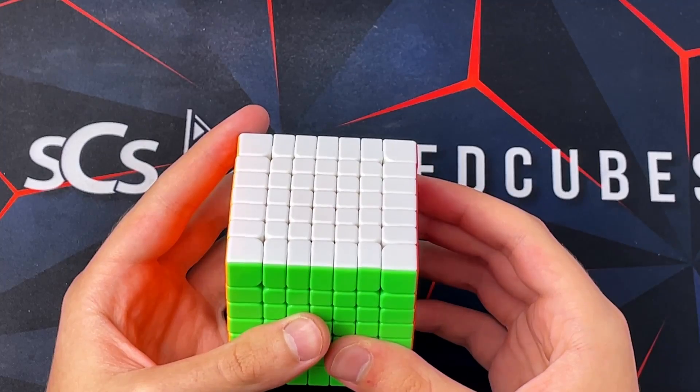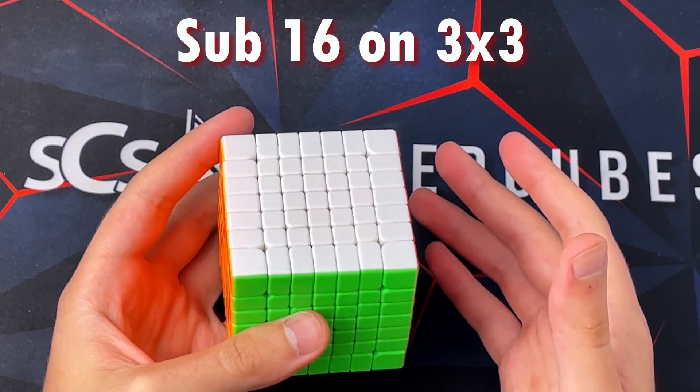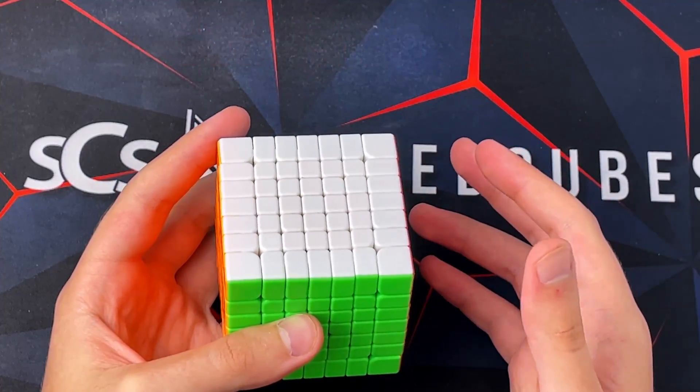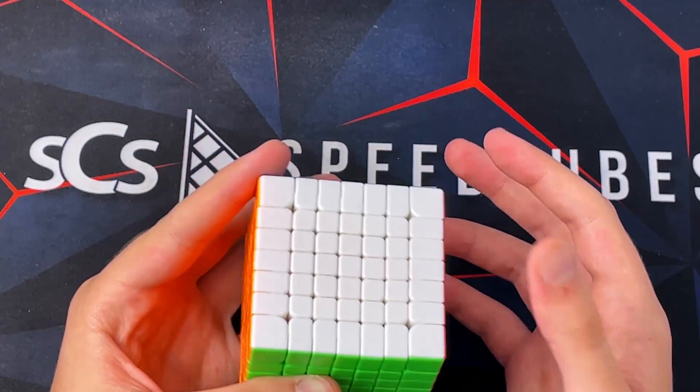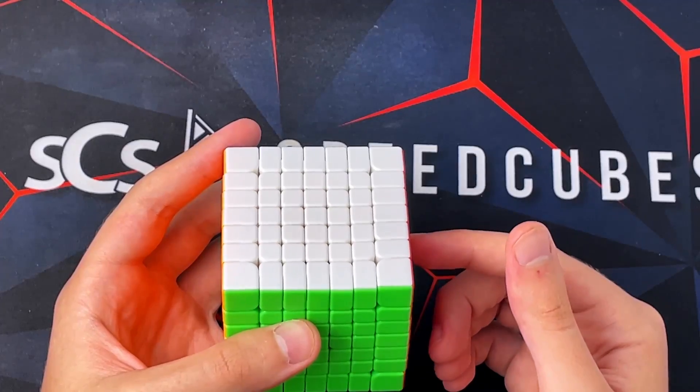The next thing required is for you to be at least sub 16. You can get away with being a little slower on 3x3, but I recommend being sub 16 because then your lookahead will be at a point where it'll be pretty easy to achieve sub 5 on 7x7.